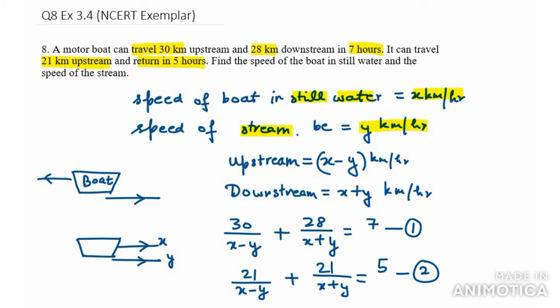Two things we have, x and y. Let's talk about upstream. Upstream means the speed of the boat and the stream are in opposite directions. So upstream speed is x minus y. Remember this concept. Then downstream, the boat and stream move together, so downstream is x plus y.